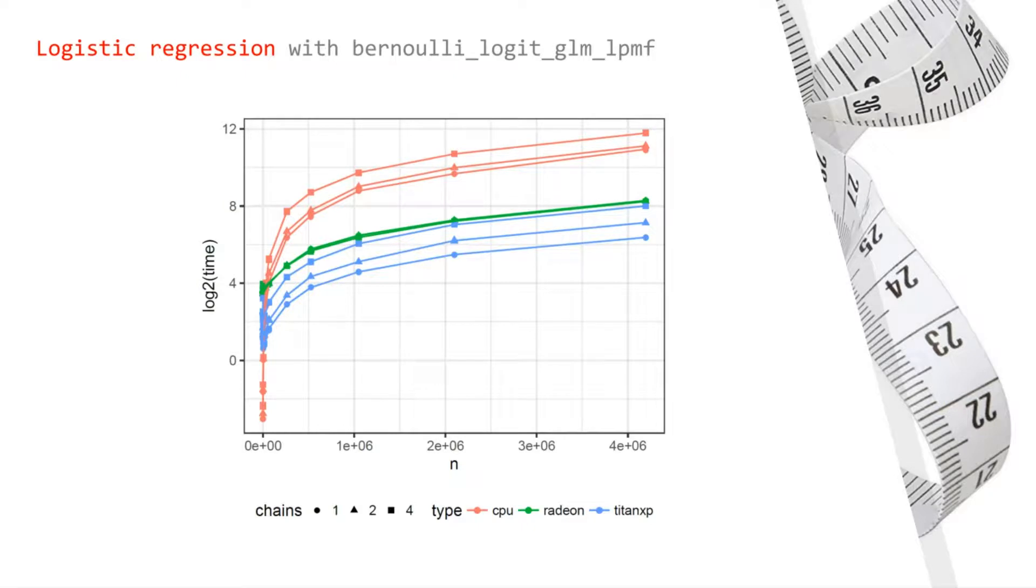Similarly, running four chains in parallel is less than two times slower than running two chains in parallel. This is true for both when the GPU and CPU are used as well as only the CPU is used. This behavior is not unexpected, but what is somewhat more surprising is that the CPU and GPU speed-up versus CPU only is higher for four chains.